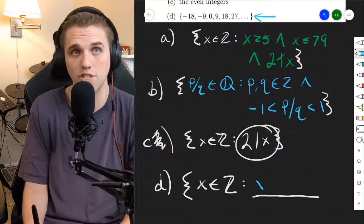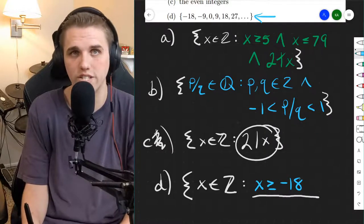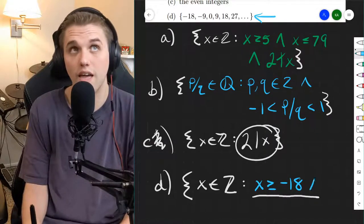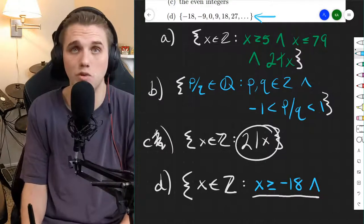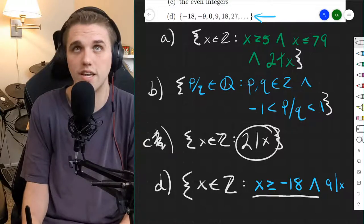How do we do that? Well, first, we need to establish that X is larger than negative 18, or at least as large as negative 18. And we need to establish that it's a multiple of 9. So 9 divides X. And that's it.